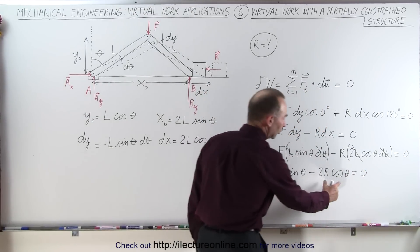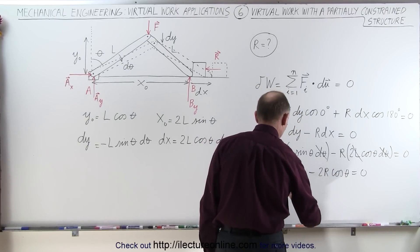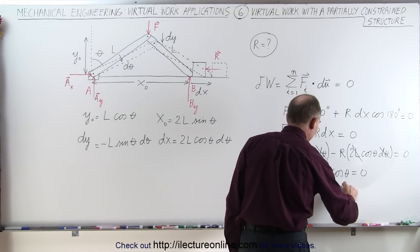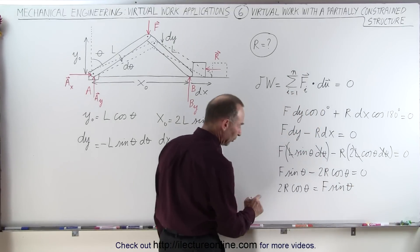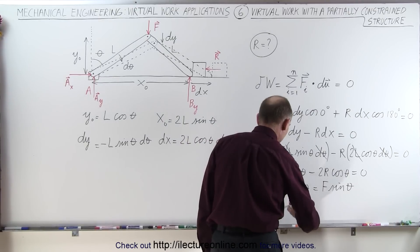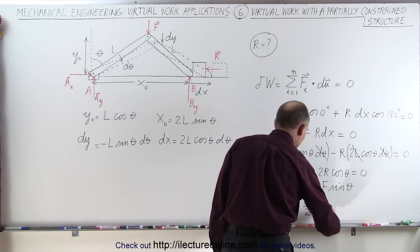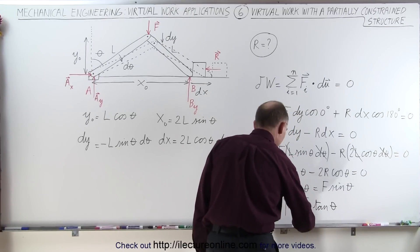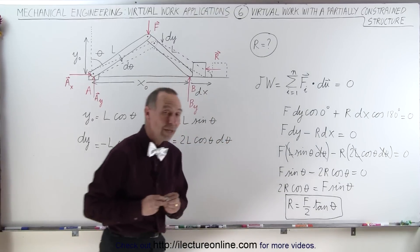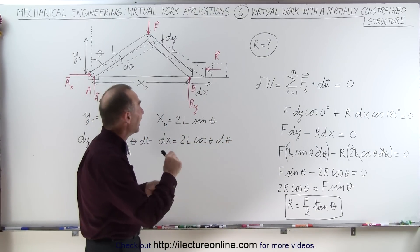So now I can move the 2R cosine of theta to one side, have this on the other side, so we have 2R cosine of theta is equal to F times the sine of theta, and now we divide both sides by 2 and both sides by the cosine of theta, we can write that R is equal to half of F times the tangent of theta, because the sine divided by cosine is the tangent. And so now we have found the magnitude of R in terms of F and the angle theta.